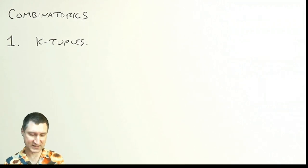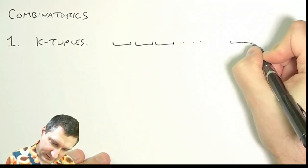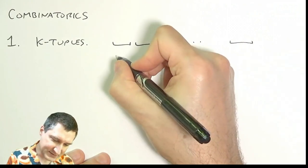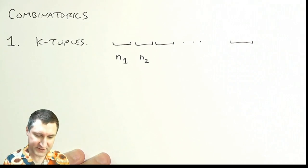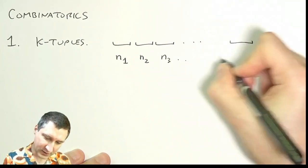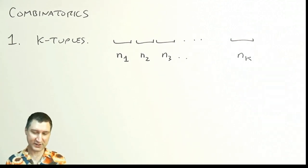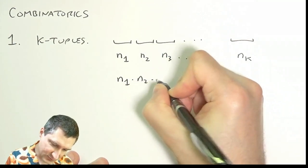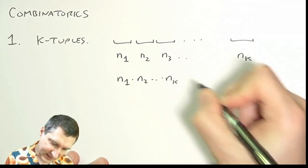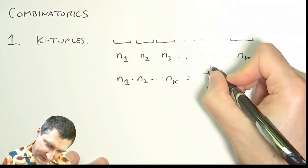I want to know how many total possibilities there are. The setup is: I have k slots, n1 possibilities for the first slot, n2 possibilities for the second slot, and so on all the way to nk possibilities for the last slot. The total number of possibilities is n1 times n2 times all the way up to nk.